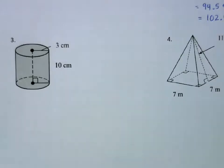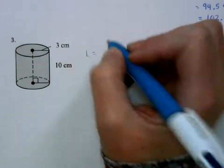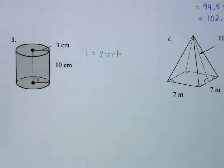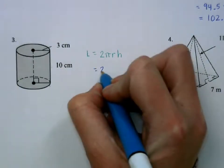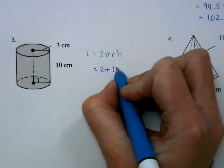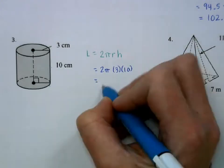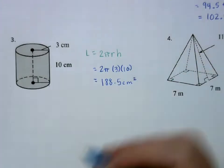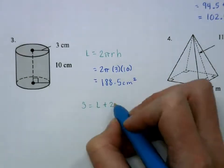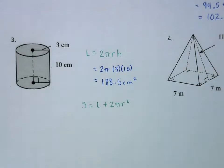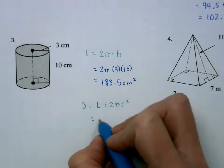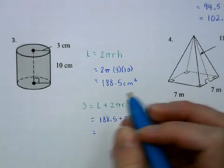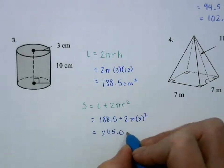Next we have a cylinder. The lateral area of a cylinder is 2πrh — it's the circumference of the circle times the height. With radius 3 and height 10, we get 188.5 centimeters squared. The surface area is the lateral area plus 2πr², because we're adding on the two circles. So this is 188.5 plus 2π times 3 squared, giving us 245.0 centimeters squared.